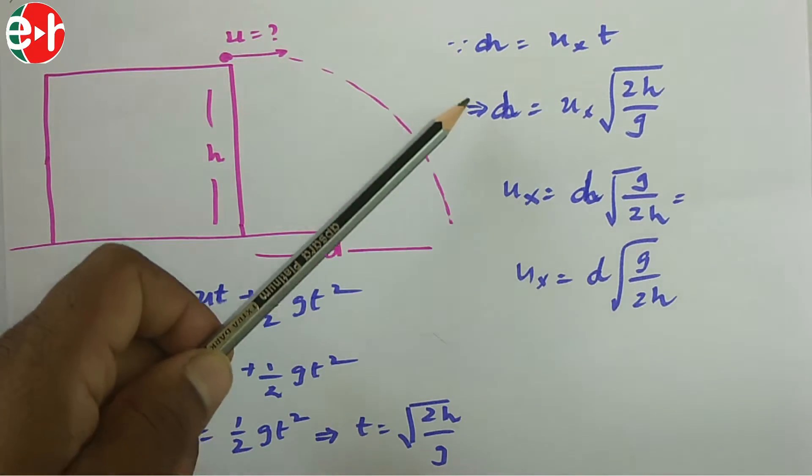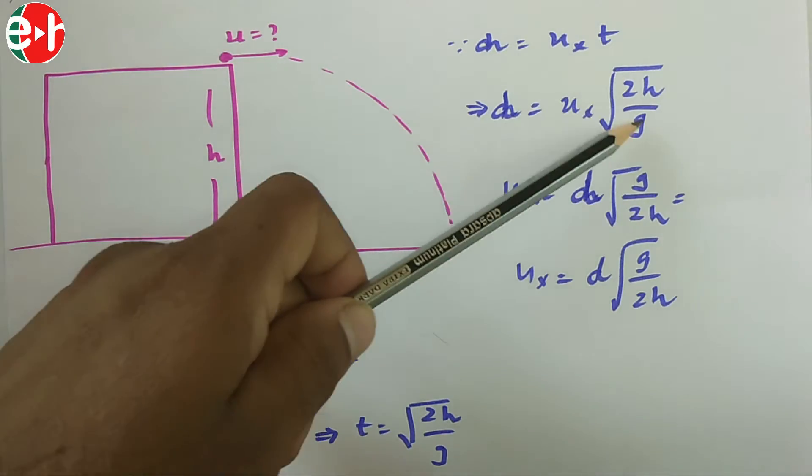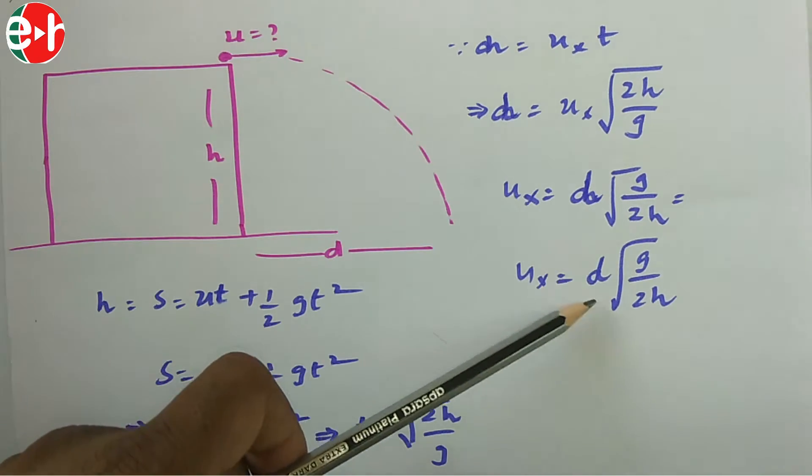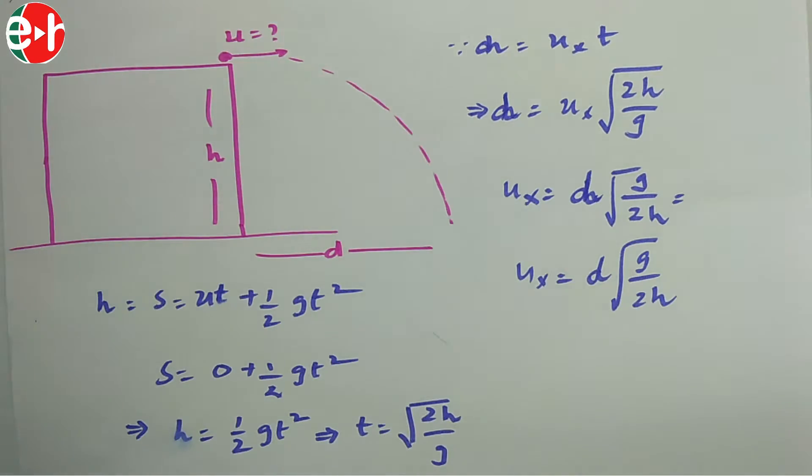Substituting T = √(2H/g) into the range equation and simplifying, we get Ux = D·√(g/2H).